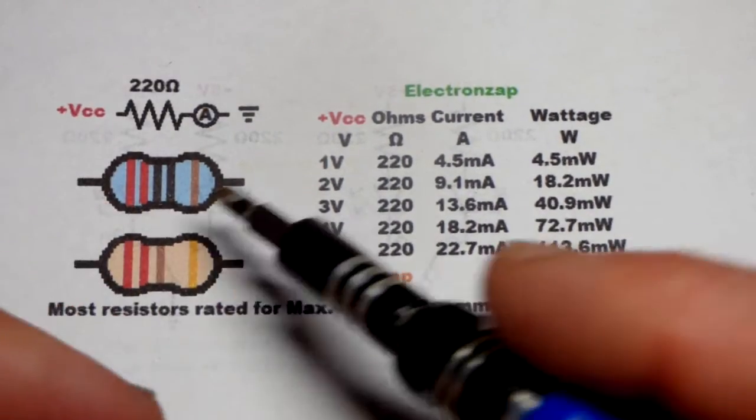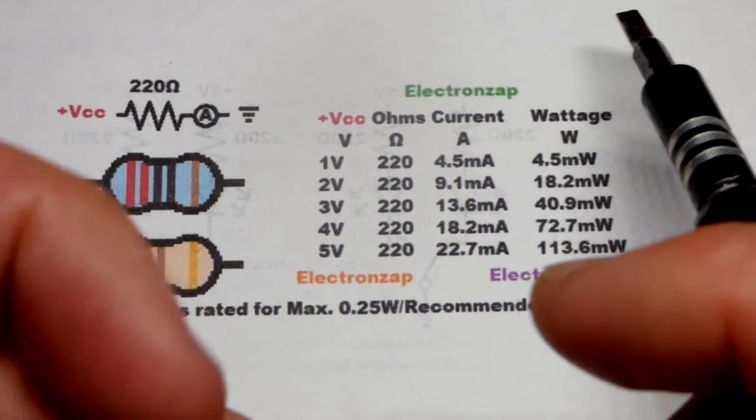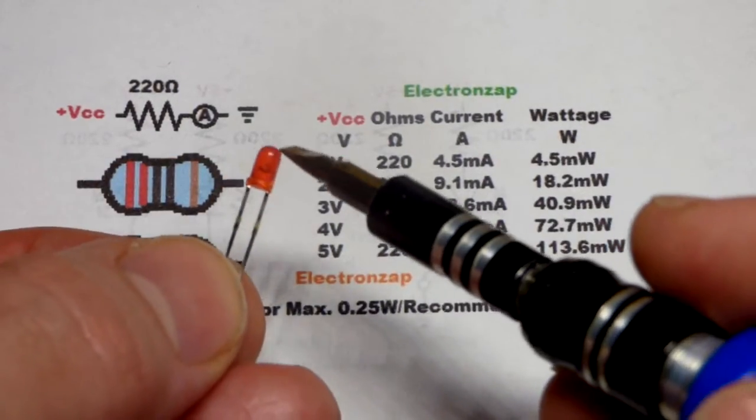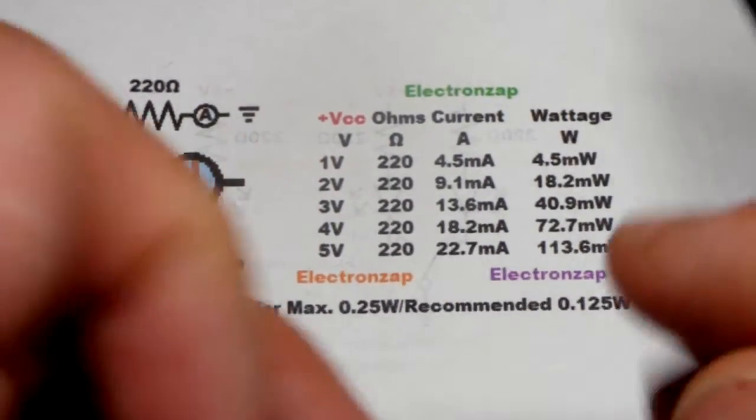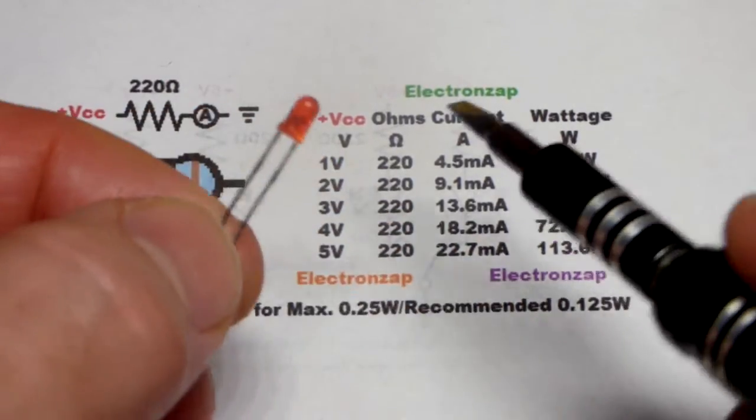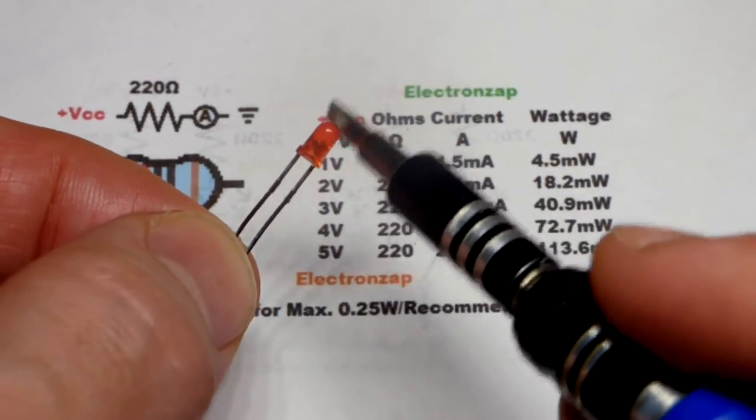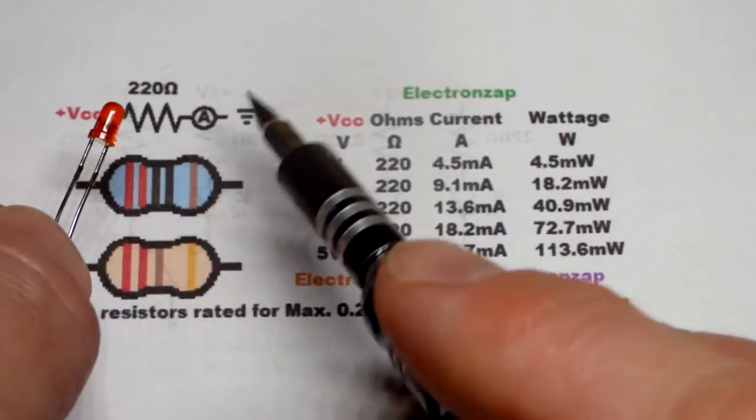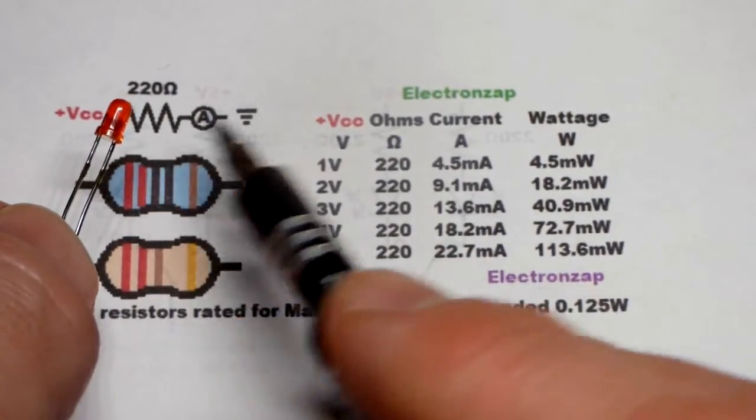So a lot of times I use a 220 ohm resistor to protect a red LED from 5 volts in the circuit. But hopefully you're already aware of this now. It's one of the first things you should learn when you learn electronics. When you put a LED in series with a resistor.